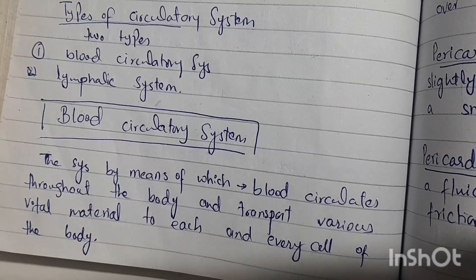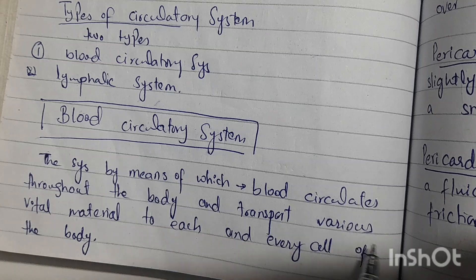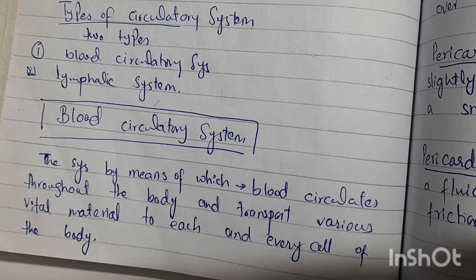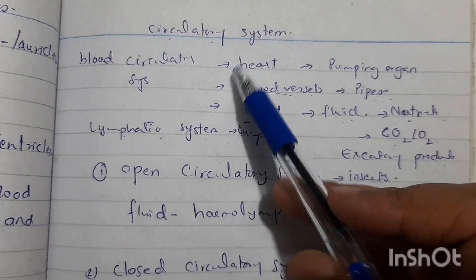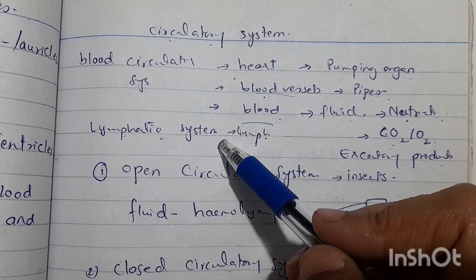First of all, we study the blood circulatory system — the system by means of which blood circulates throughout the body and transports various vital materials to each and every cell of the body. Students, in our circulatory system there are two types: one is the blood circulatory system and the other is the lymphatic system.